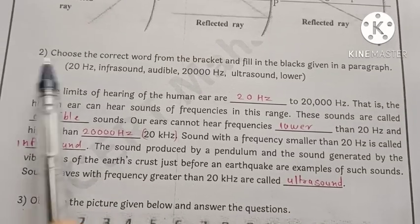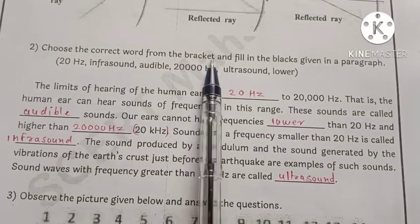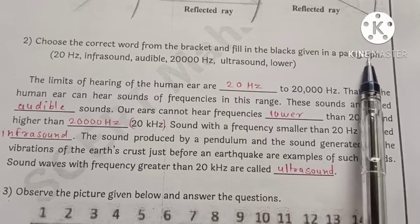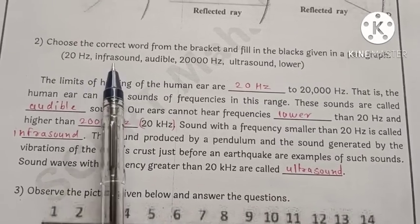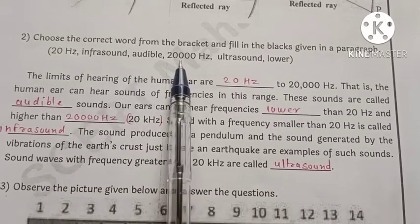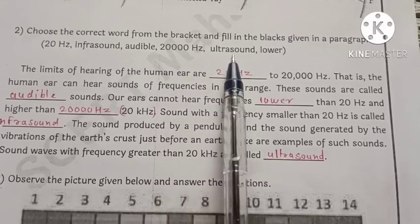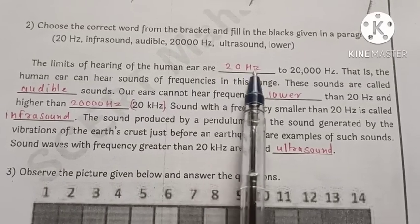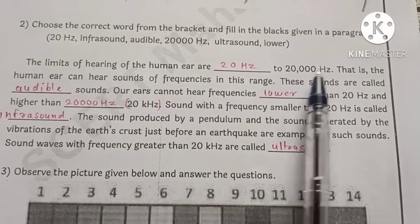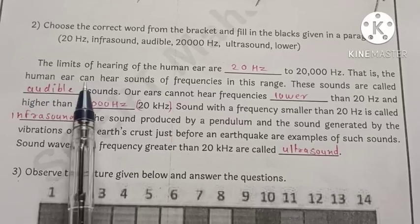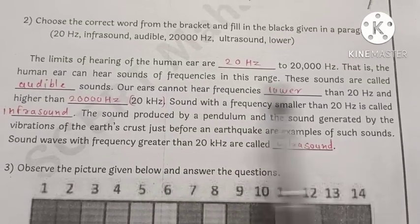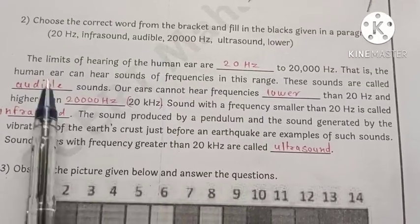Second sub-question: choose the correct word from the bracket and fill in the blanks given in the paragraph. 20 Hz, infrasound, audible, 20,000 Hz, ultrasound, lower. The limits of hearing of human ears are 20 Hz to 20,000 Hz. That is, the human ear can hear sound frequency in this range. These sounds are called audible sounds.